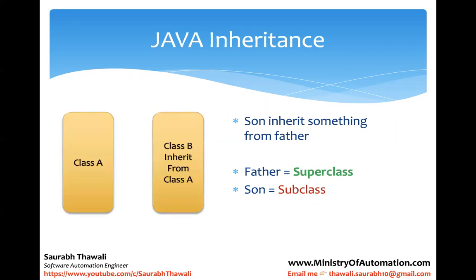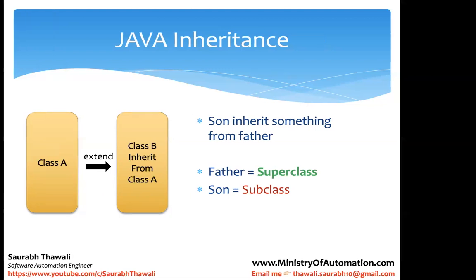In a previous example we saw how objects help us communicate between classes. Now on a similar basis: I have a Class A with attributes, methods, and variables inside it. I have a Class B that inherits from Class A. Class B is like the son - it's the subclass, while Class A is the superclass - the father. There must be some way to do this inheritance, and that way is using the extends keyword. Java understands that Class B is inheriting from Class A through extends.